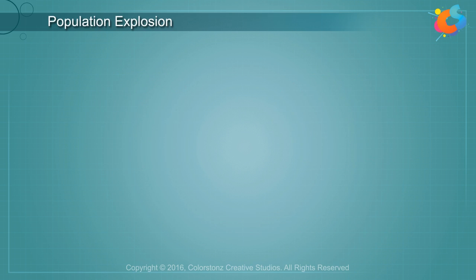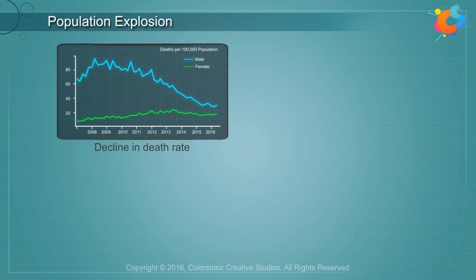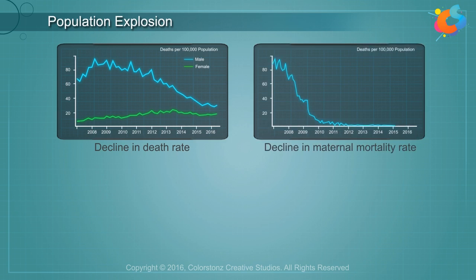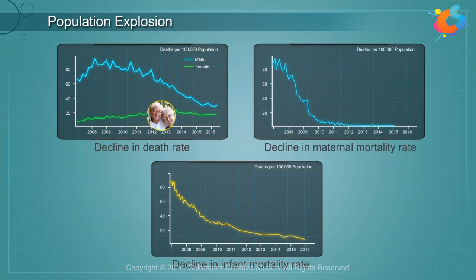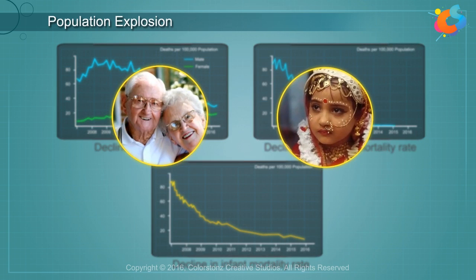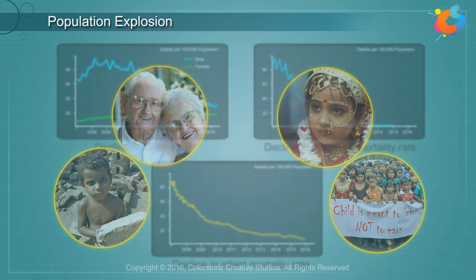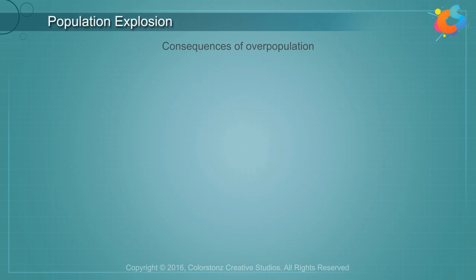Population Explosion is mainly due to slower decline in death rate, maternal mortality rate and infant mortality rate, longer lifespan, early marriages, child labour and lack of education.